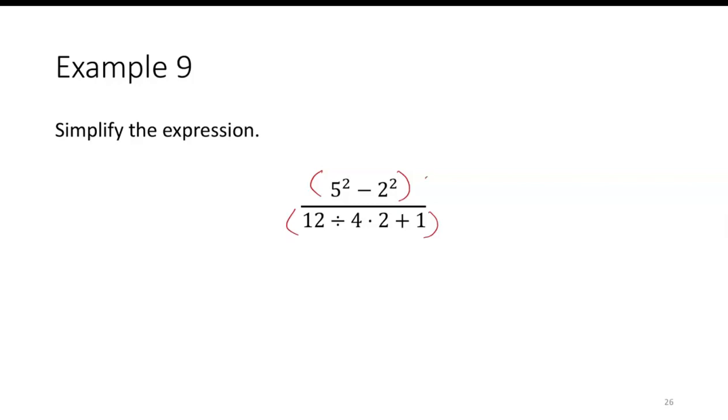So on the top, I would deal with the exponents. This would be 25 minus 4, which is 21. On the bottom, I have 12 divided by 4 times 2 plus 1. So 12 divided by 4 would be first, and so that would be 3 times 2 plus 1, is 6 plus 1, or 7.